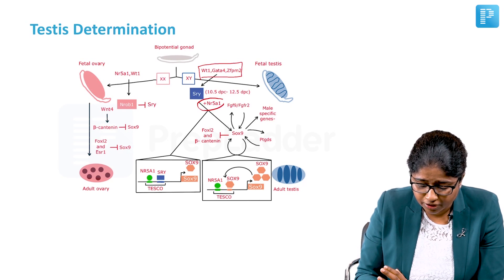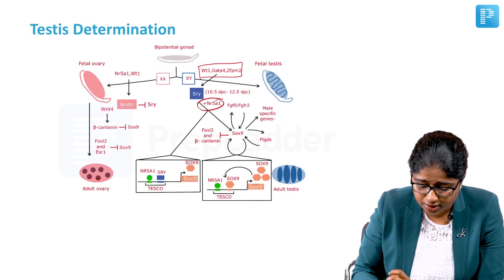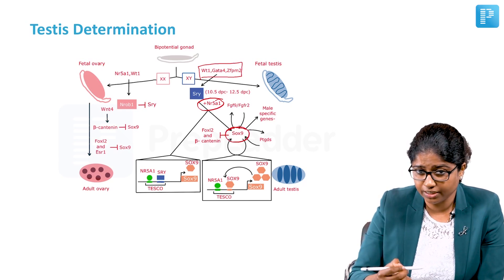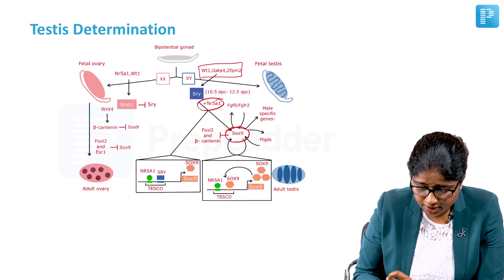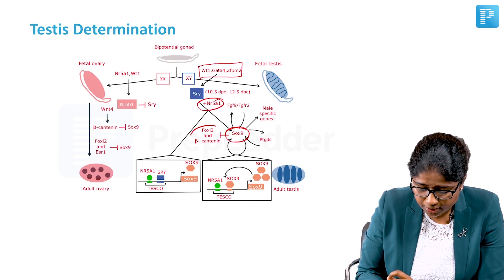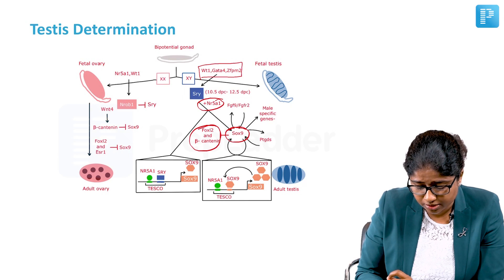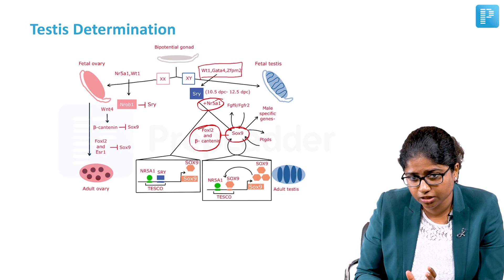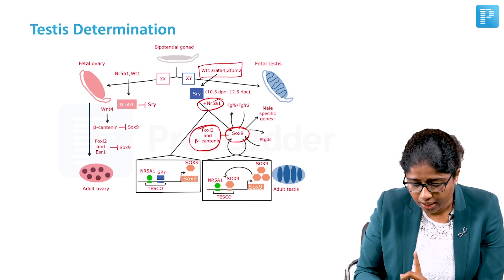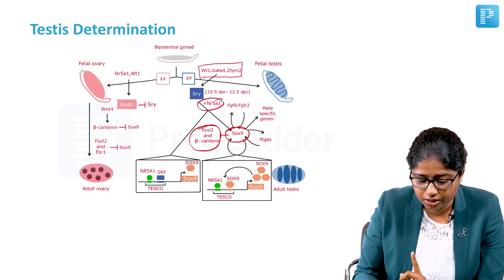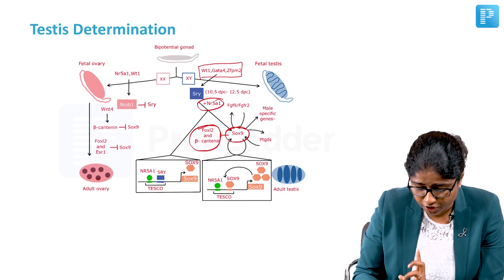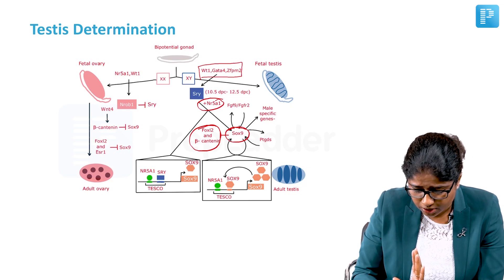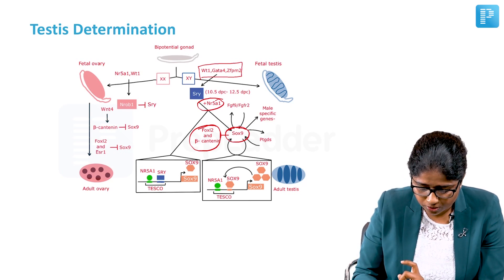In the cells which have this NR5A1, the SRY results in promotion of the SOX9, which I already talked about. SRY increases the SOX9 expression. SOX9 inhibits female or ovarian development factors. That is, the FOXL2 and beta-catenin are ovarian development factors which are inhibited by SOX9. SOX9 stimulates the male specific genes: increases FGF9, FGFR2, and the PTGDS gene. These are all the things which are increased by SOX9.